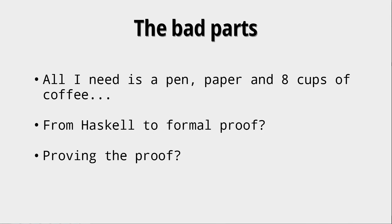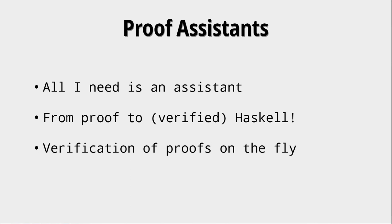These problems are addressed by proof assistants, also sometimes referred to as interactive theorem provers. A proof assistant does the boring parts of the proof, like rewriting terms or applying lemmas, for us. We only have to tell the assistant how to do the proof. Instead of worrying about how to go from Haskell to proof, we do it the other way around and generate Haskell code from our theorems in a verified manner. Proof assistants are not just passive rule rewriting engines - they check whether our proofs are correct according to their own method. A proof assistant will not let us do any nonsensical steps or invalid applications of theorems.